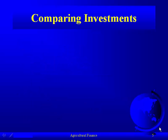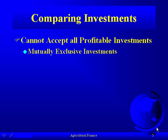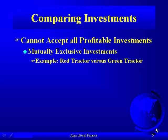We start today's lecture with the premise that we can't accept all profitable investments. There are lots of investments out there that you know would be good, but you can't invest in all of them. One reason is mutually exclusive investments — mutually exclusive, a term from statistics, basically means that if you choose one, you can't choose the other. There's no intersection between the two; it's either one or the other.